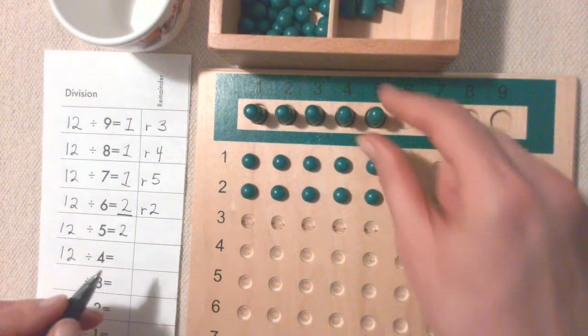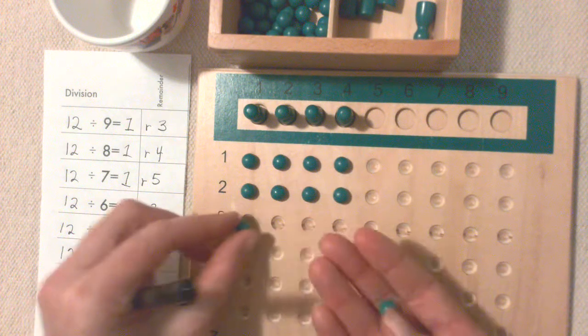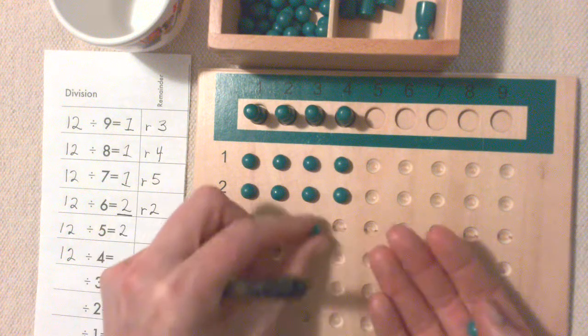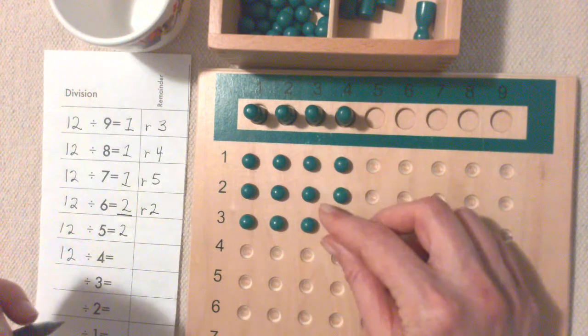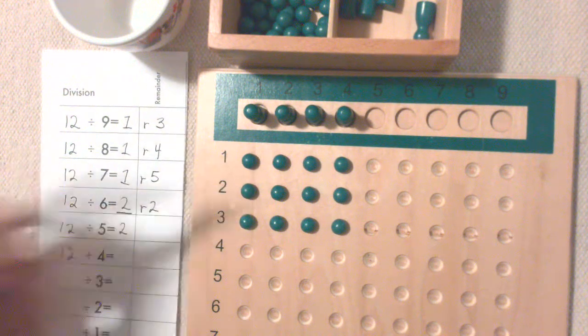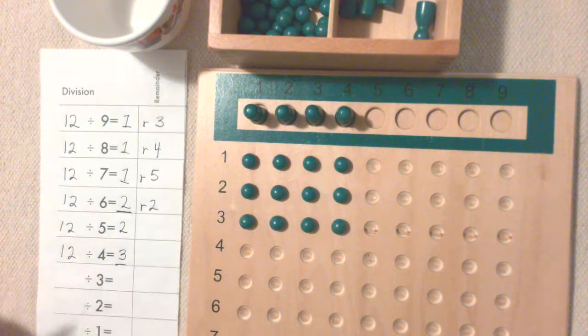12 divided by 4. Each Skittle gets three. So the answer is three with no remainders.